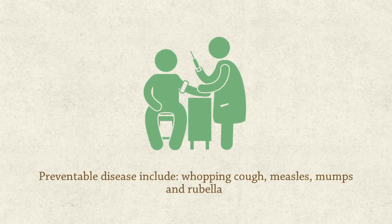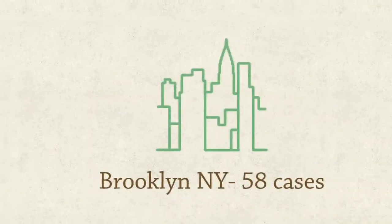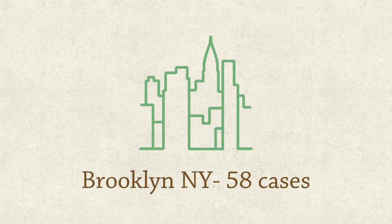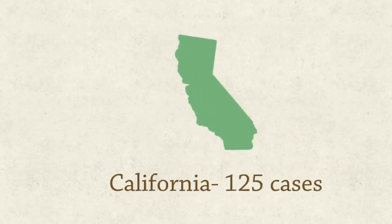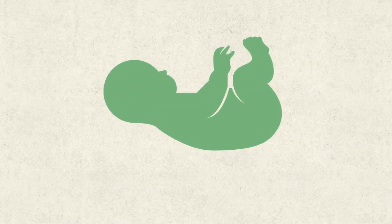There have been several outbreaks of preventable diseases, which include pertussis — also known as whooping cough — measles, mumps, and rubella. Measles was officially eliminated in 2000, but recently there have been a number of outbreaks. In 2013, Brooklyn, New York had 58 cases of measles, and all infected were unvaccinated. In 2014, California had 125 cases of measles — 49 were unvaccinated and 12 were infants. All of the 12 infants infected were too young to be vaccinated.